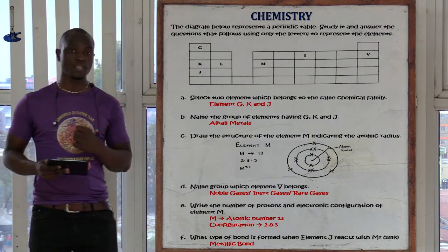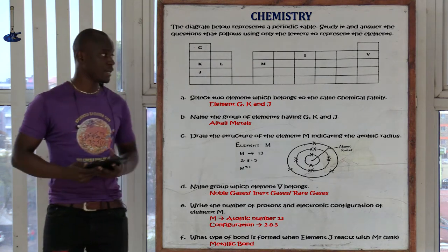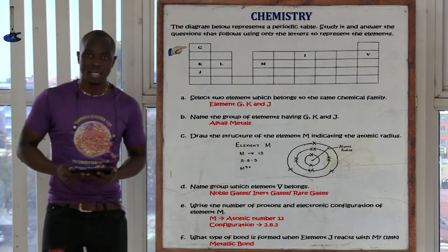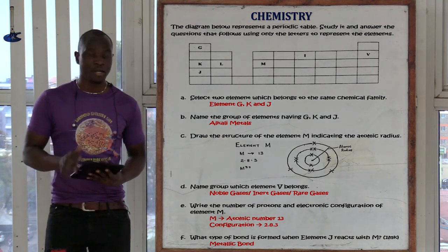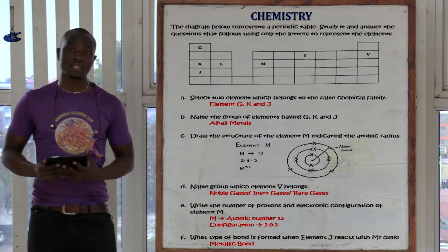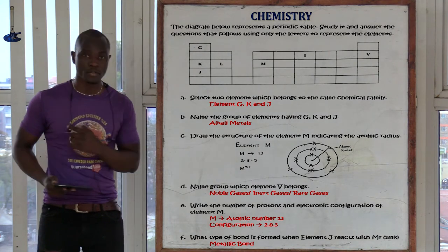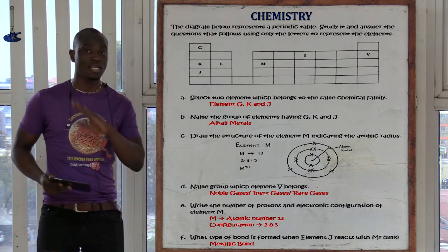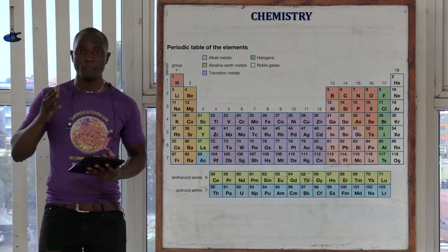The first question asks: select two elements which belong to the same chemical family. The elements belonging to the same chemical family are G, K, and J. The name given to that chemical family is alkali metals. You should never say 'alkaline metals' — that is wrong. It should only be alkali metals. That is the name given to group one elements.